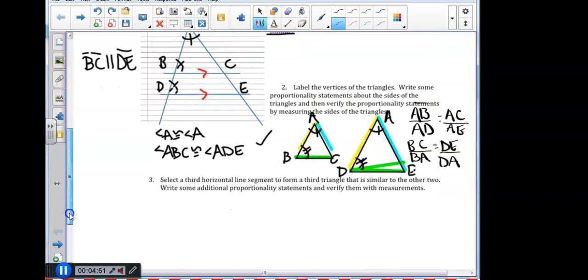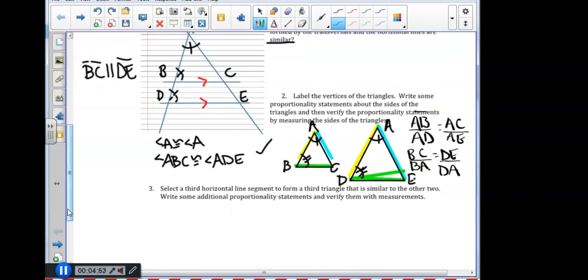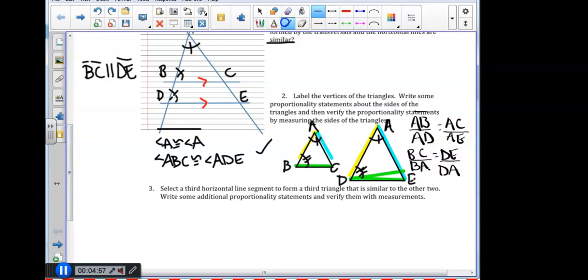In number 3, we're then asked to select a third horizontal line segment. So I'm going to say that this one down here will be the third horizontal line segment. And let's label that FG. So now we have three triangles.